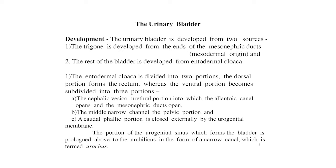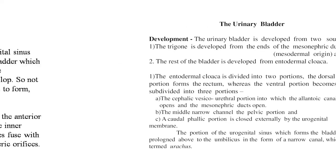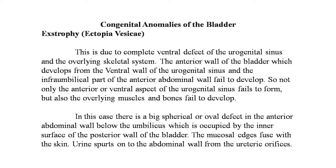Second is the middle narrow channel — the pelvic portion. The caudal phallic portion is closed externally by the urogenital membrane. The second and third parts contribute to the urogenital sinus. The cephalic vesico-urethral portion forms the major part of the urinary bladder except the trigone. The portion of the urogenital sinus which forms the bladder is prolonged above the umbilicus in the form of a narrow canal termed the urachus.